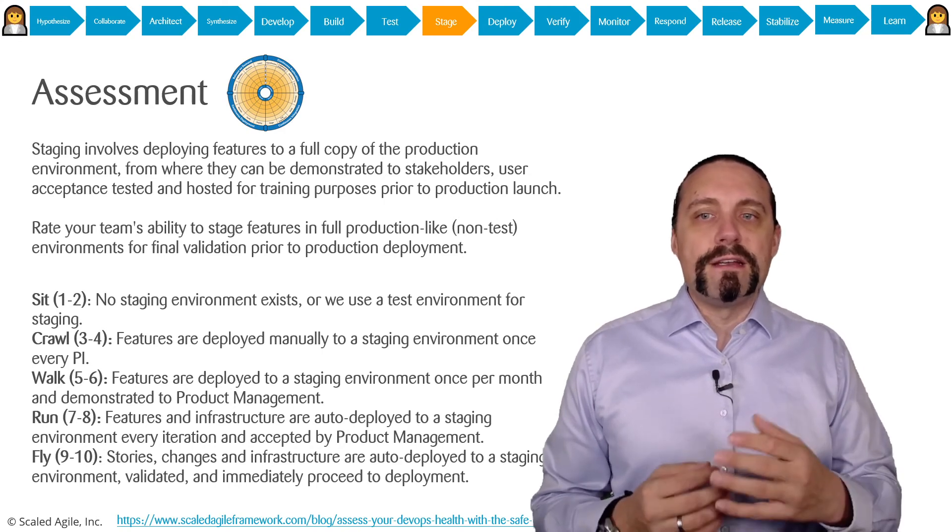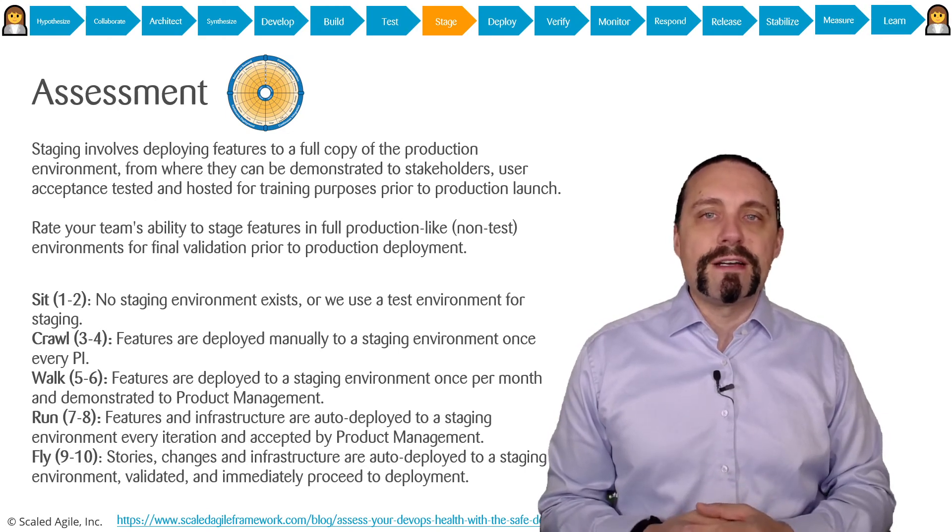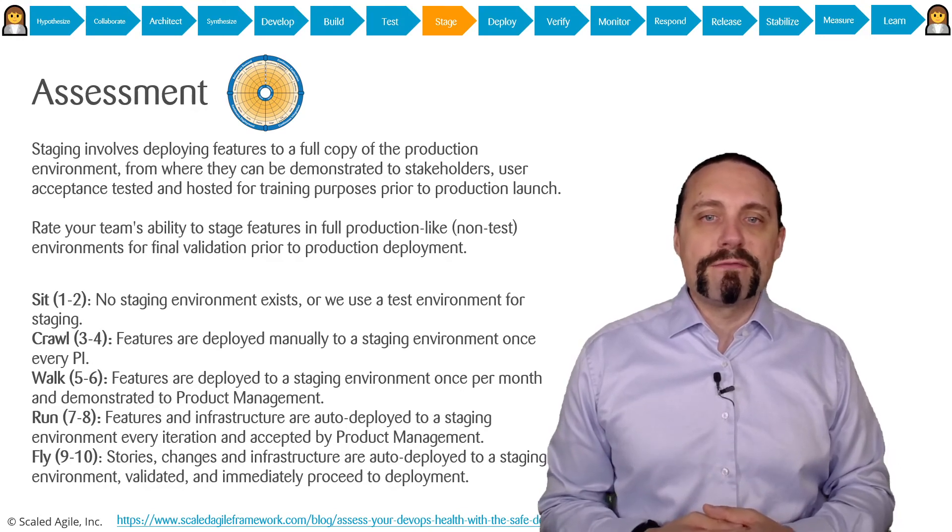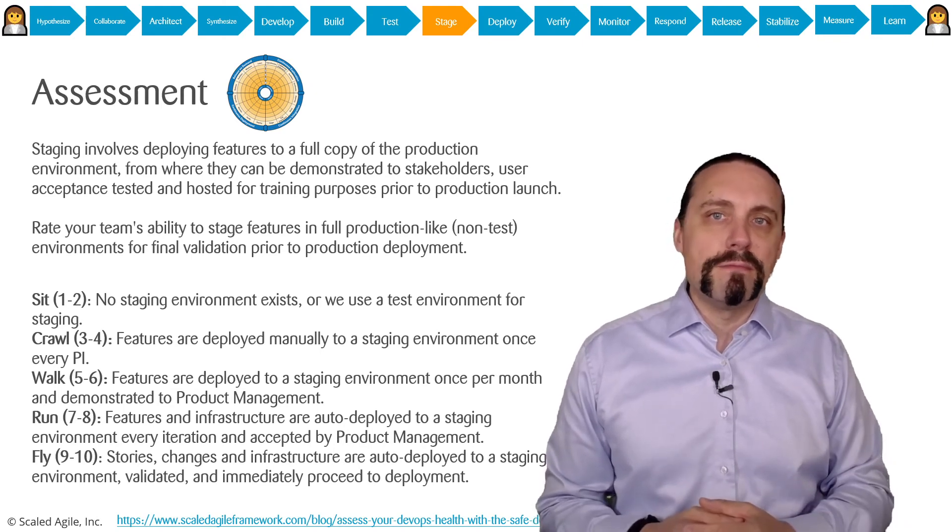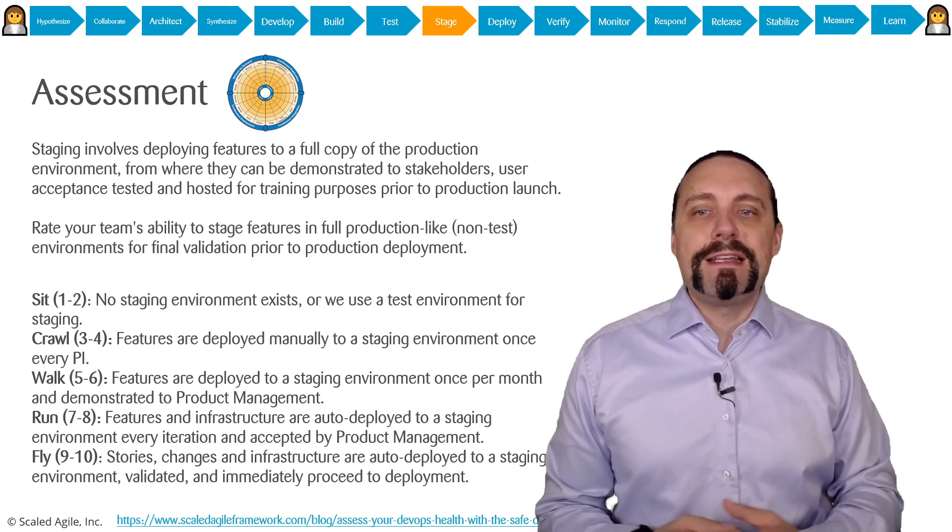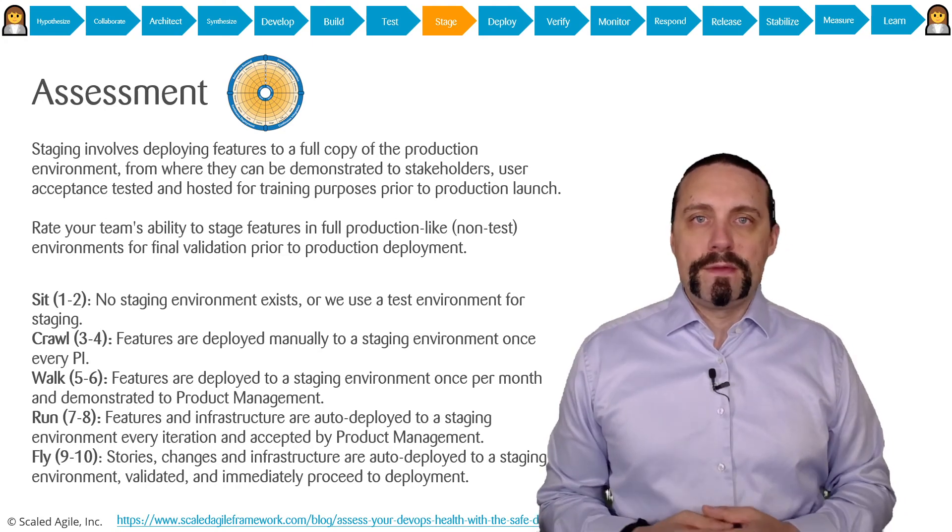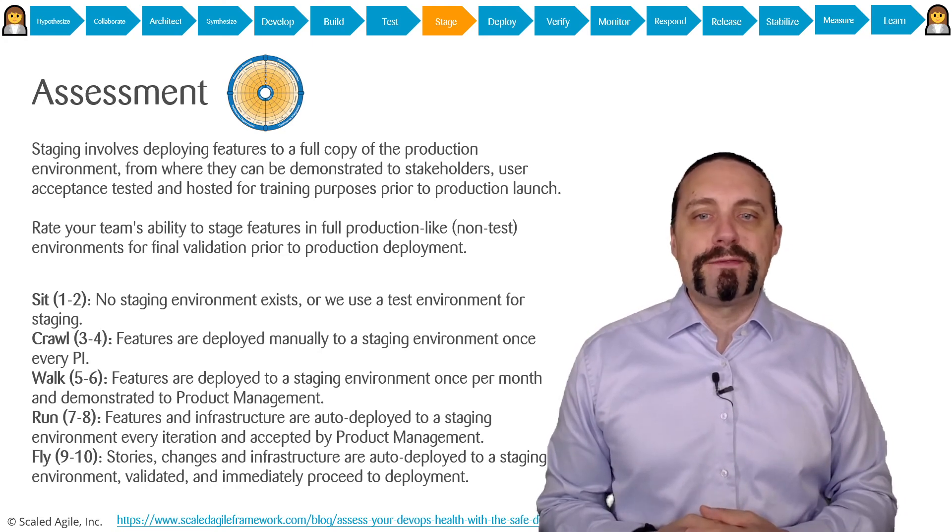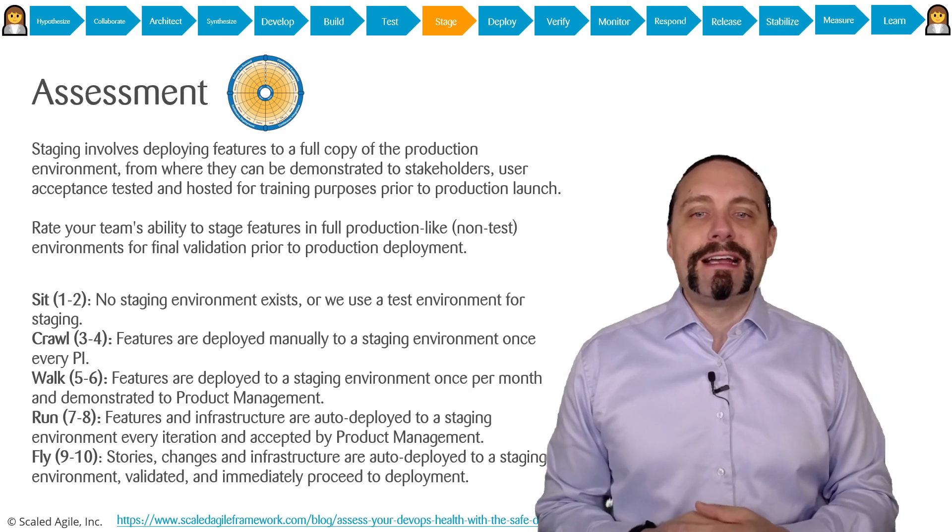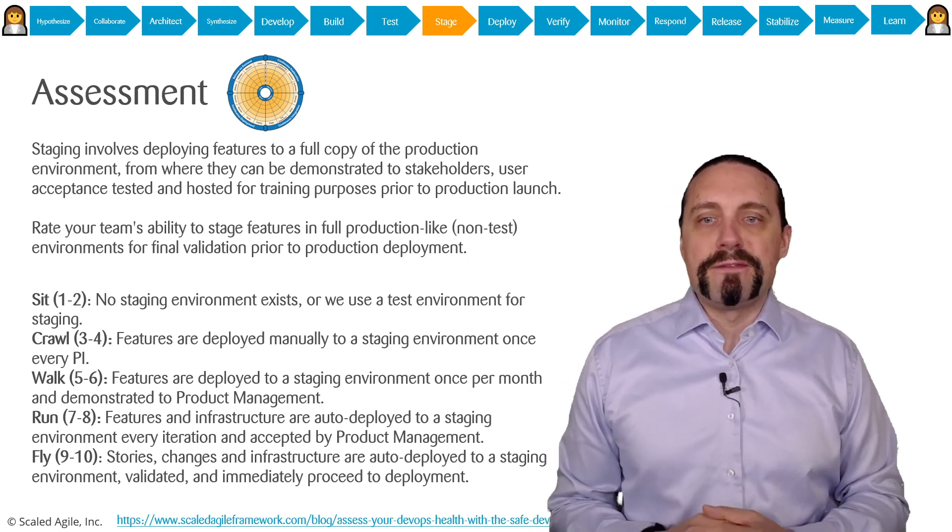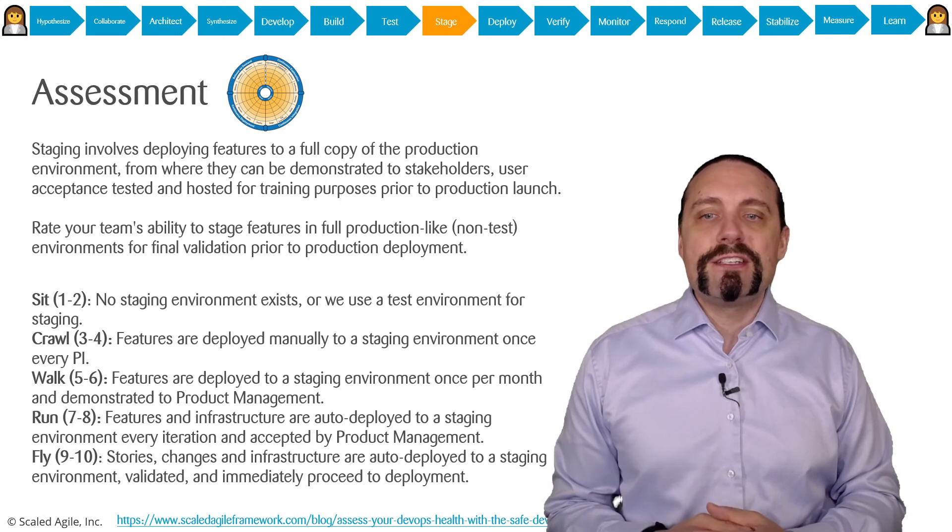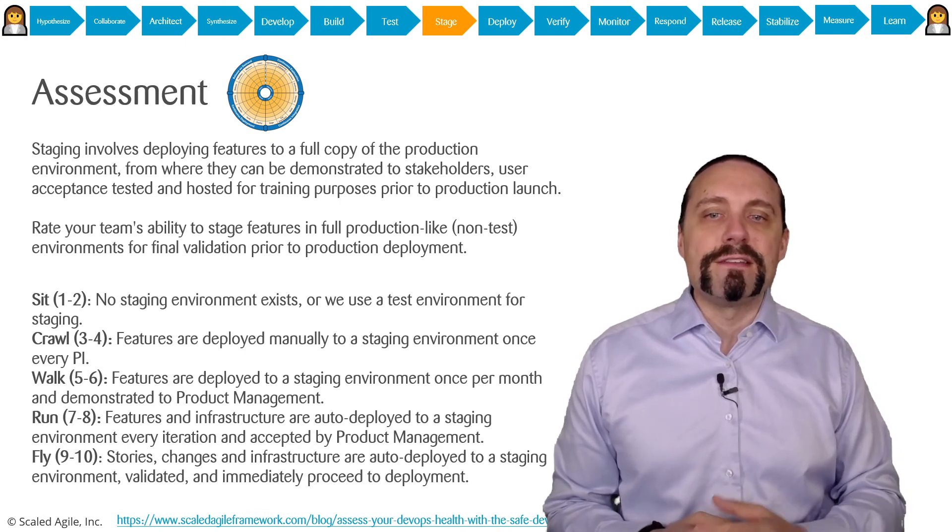You are sit when no staging environment exists or we use a test environment for staging. You are crawl when features are deployed manually to staging environment once every PI or every three months. You are walk when features are deployed to staging environment once per month and demonstrated to product management. And you are run when features and infrastructure are auto-deployed to a staging environment every iteration or sprint and accepted by product management. And you are fly when stories, changes, and infrastructure are auto-deployed to a staging environment, validated, and immediately proceed to deployment.